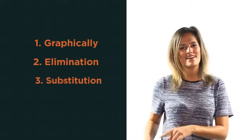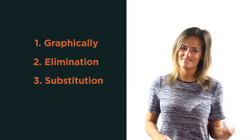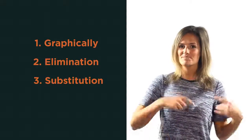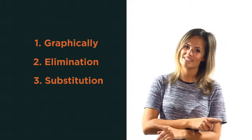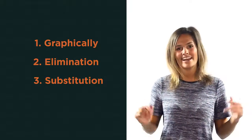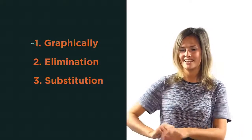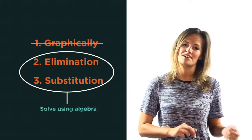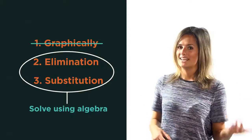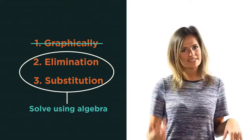There are three different methods we can use to solve simultaneous equations. We can solve them graphically and see where they cross each other, but this is really slow and actually only works if they cross at an exact point. The other two methods involve solving algebraically, by elimination or by substitution.